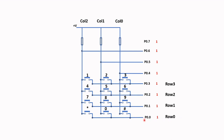Looking at the schematic, Row 0 is connected to Port 0 bit 0 (P0.0), Row 1 is connected to P0.1, Row 2 is connected to P0.2, and Row 3 is connected to P0.3. P0.4 is connected to Column 0, Column 1 is connected to P0.5, and Column 2 is connected to P0.6. Note that P0.7 is not used.